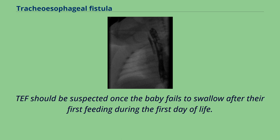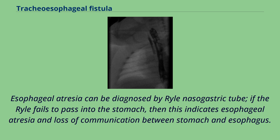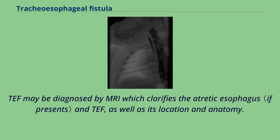TEF should be suspected once the baby fails to swallow after their first feeding during the first day of life. Esophageal atresia can be diagnosed by Ryle nasogastric tube — if the tube fails to pass into the stomach, this indicates esophageal atresia and loss of communication between the stomach and esophagus. TEF may also be diagnosed by MRI, which clarifies the atretic esophagus and TEF, as well as its location and anatomy.